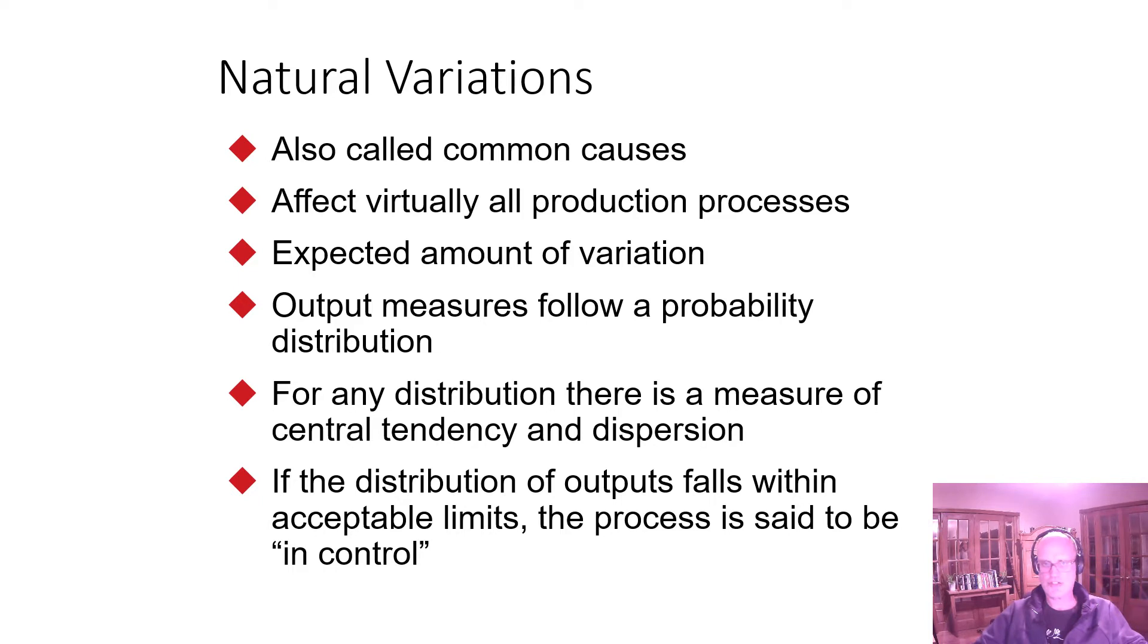Natural variation, also called common causes, always happen. There's a certain amount of expected variation. And output measures follow a probability distribution. For any distribution, there's a measure of central tendency, and there's some dispersion. So what we're trying to do is have that dispersion be predictable and consistent, and most of our values be close to the middle. If the distribution falls within the acceptable limits, the process is said to be in control. The natural variations have limits. The process is in control if it's staying within those limits.